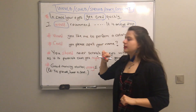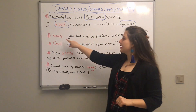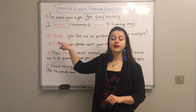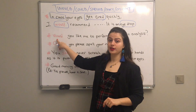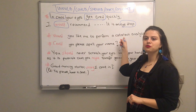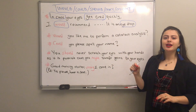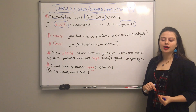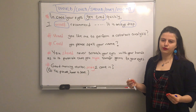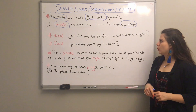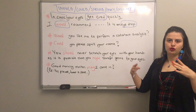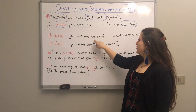Now this second example — 'would' is pronounced like 'wud' but sounds like 'would' at the beginning of a question. 'Would you like me to perform a catwalk analysis?' You can ask the patient this to understand whether he or she is asking for the treatment or for the analysis.